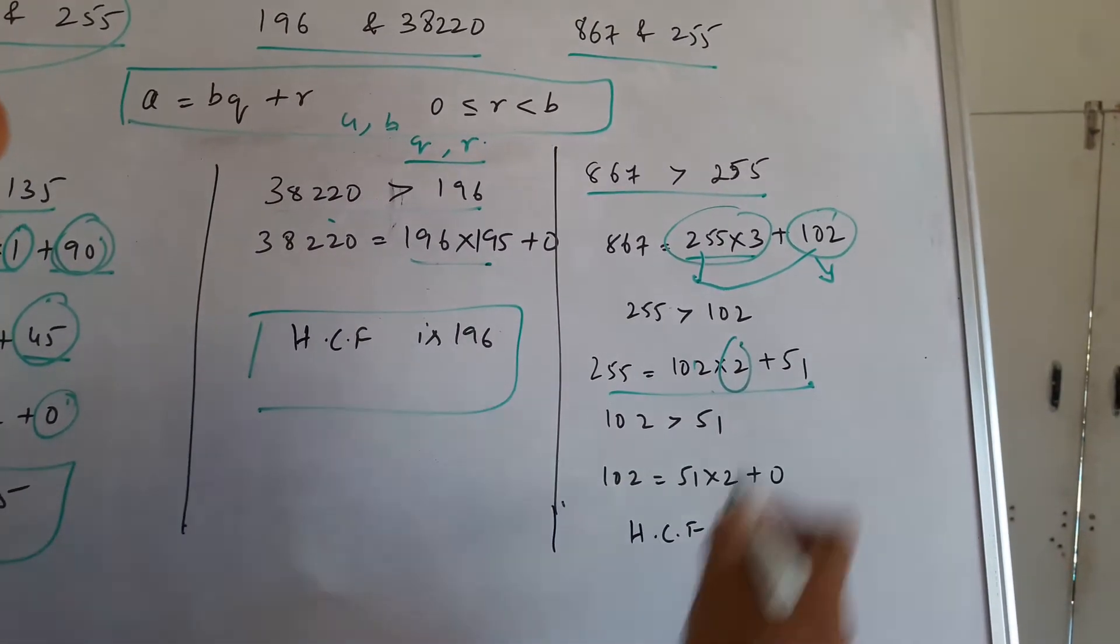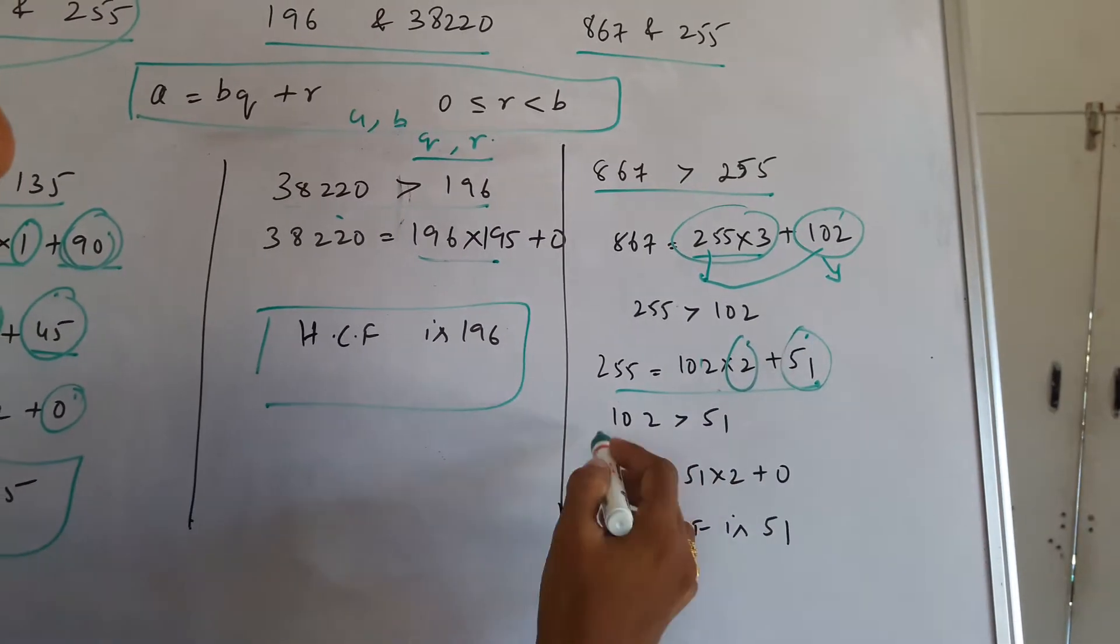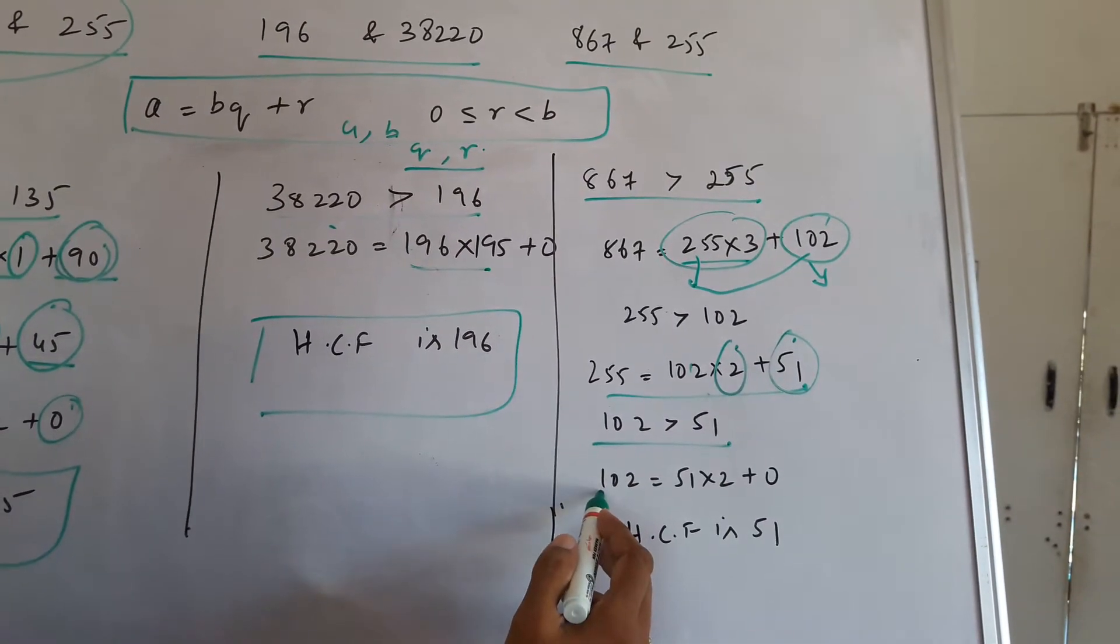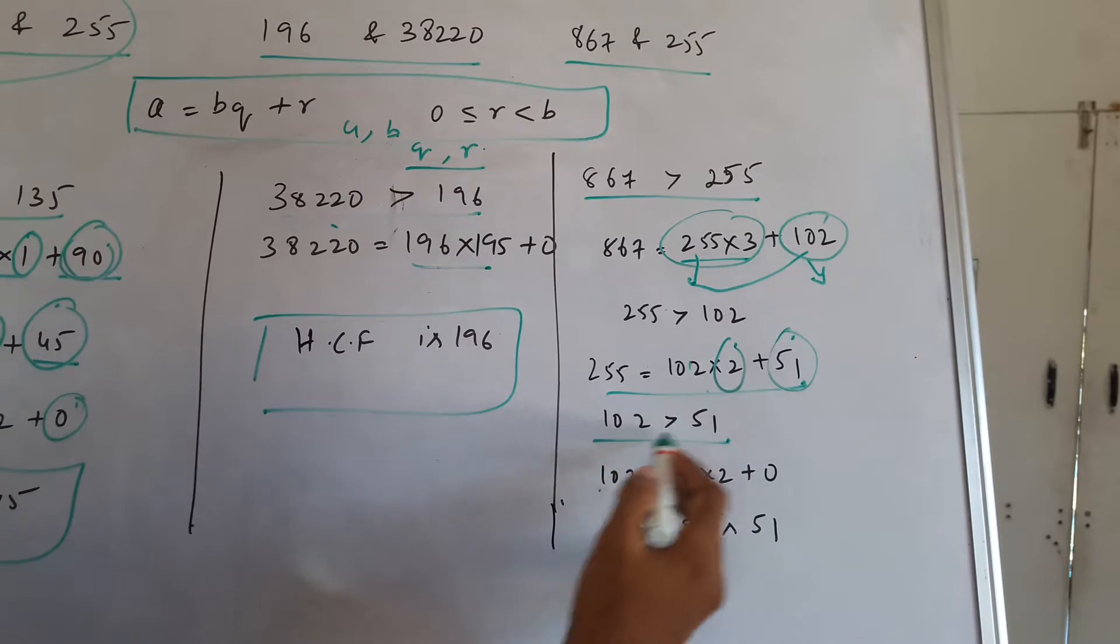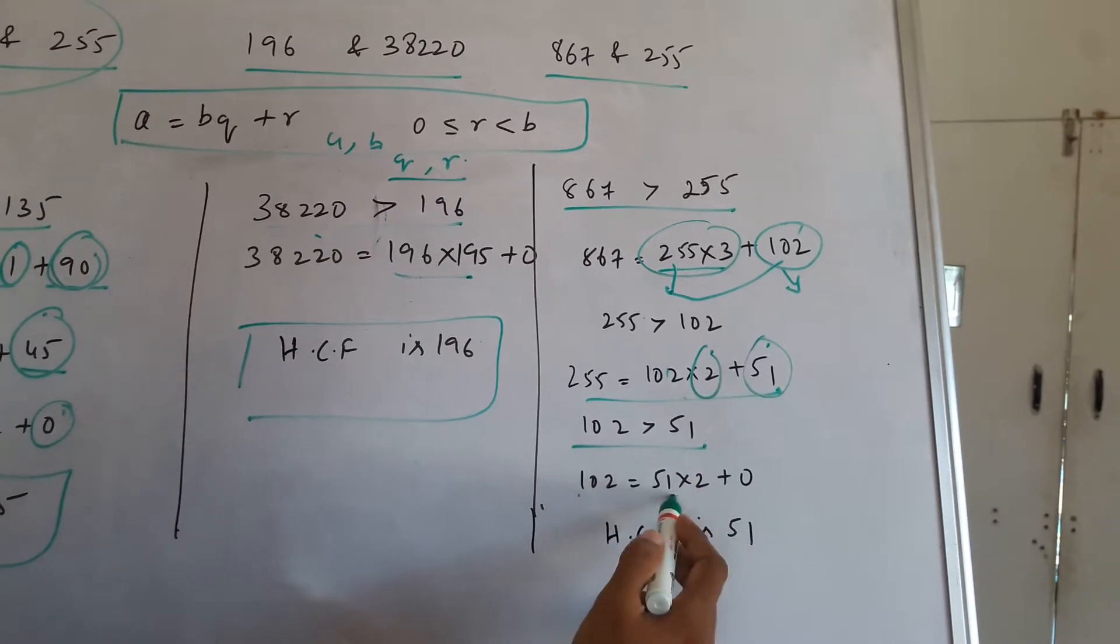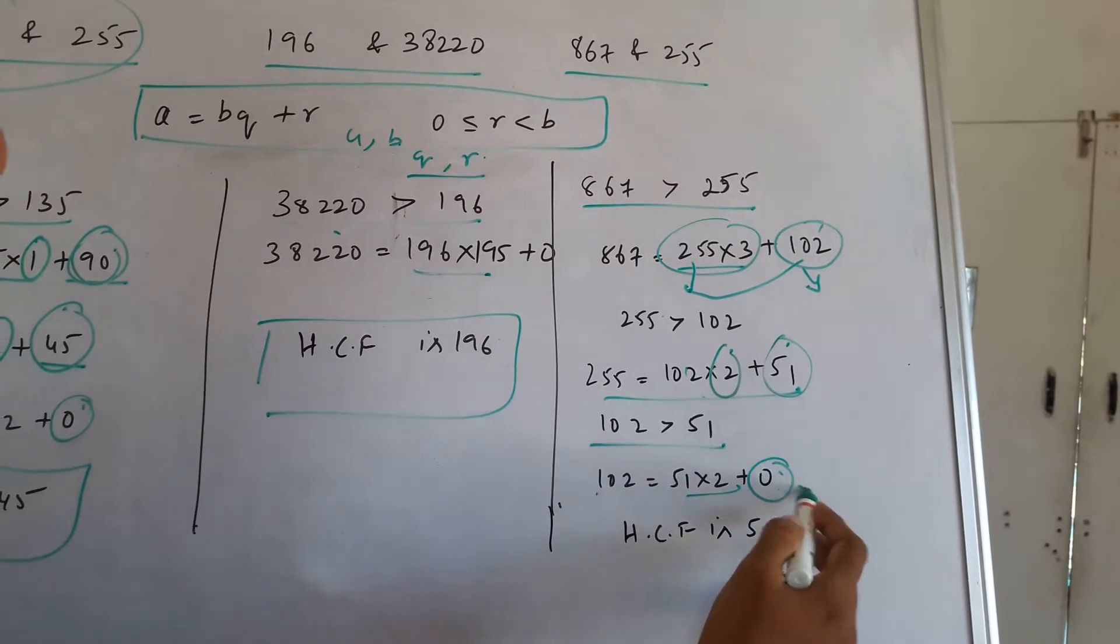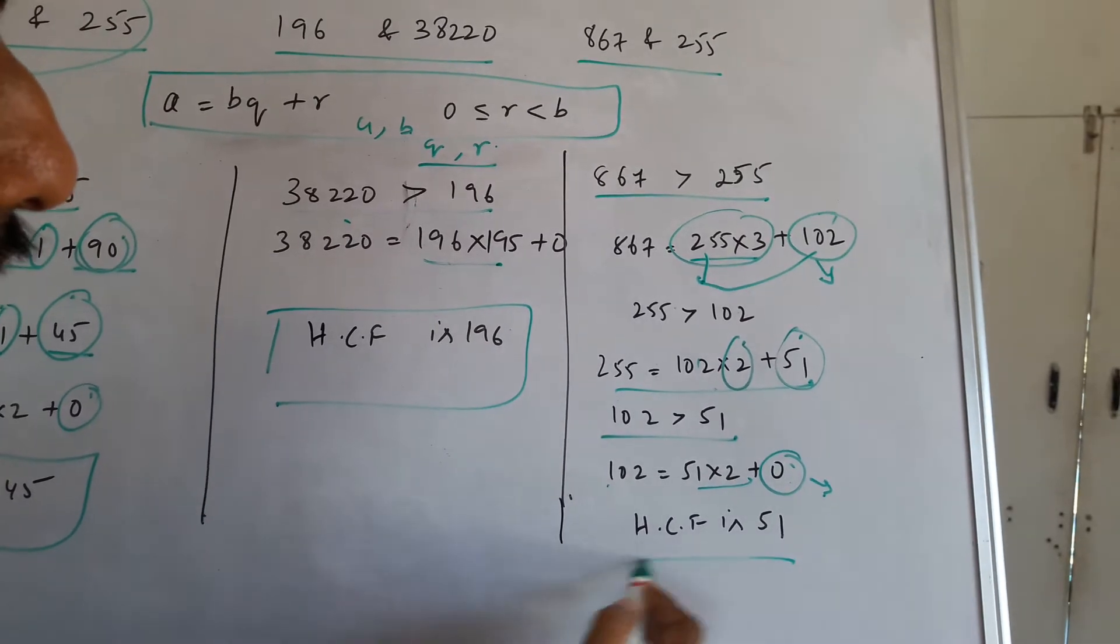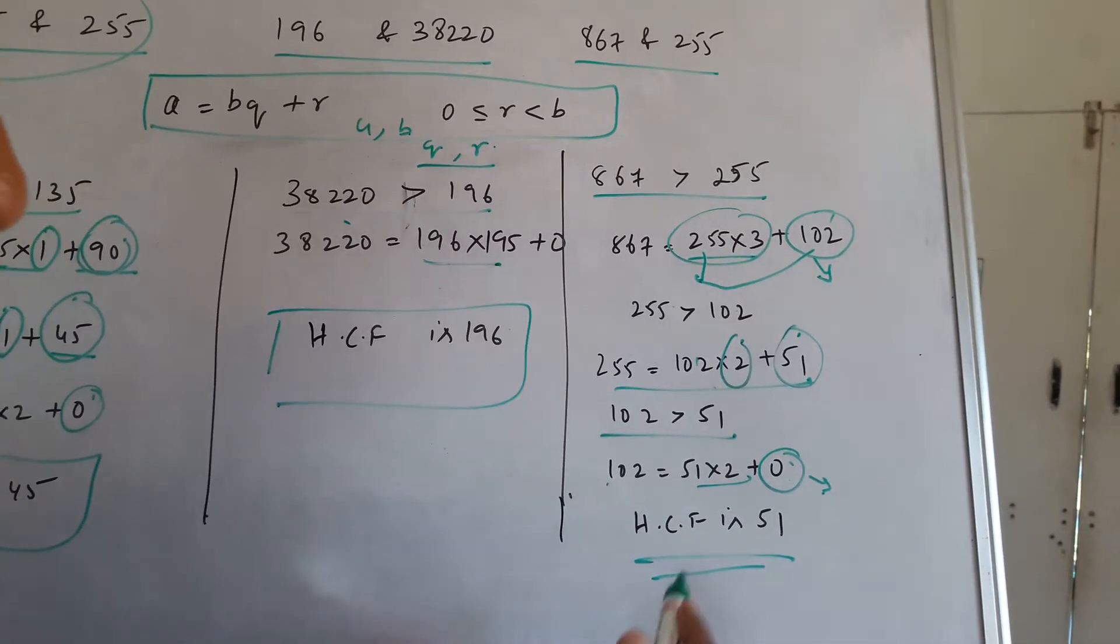Again we can find between 102 and 51, and you get the remainder which is 0. So the highest common factor for this is 51.